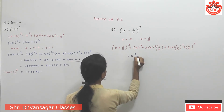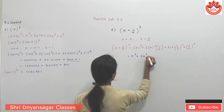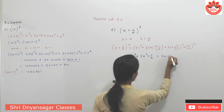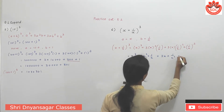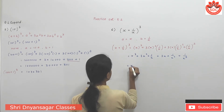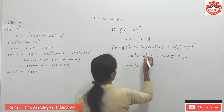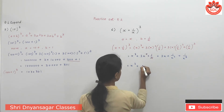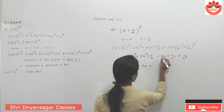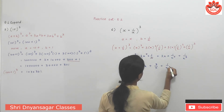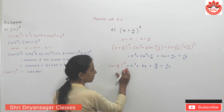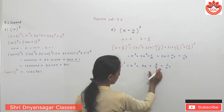Simplifying: x³ + 3x² × (1/x) — here x² and x cancel, leaving 3x. Then 3x × (1/x²) — here x and x² cancel, leaving 3/x. Plus (1/x)³ = 1/x³. So the expansion of (x + 1/x)³ = x³ + 3x + 3/x + 1/x³.